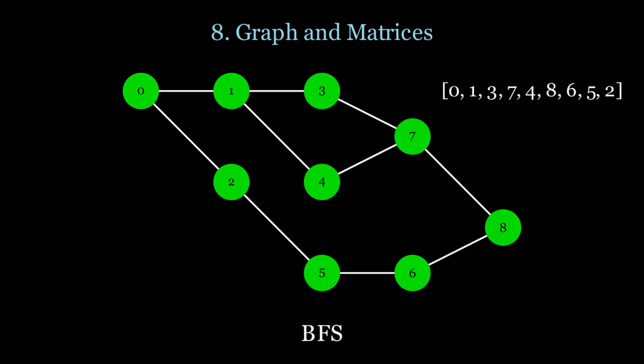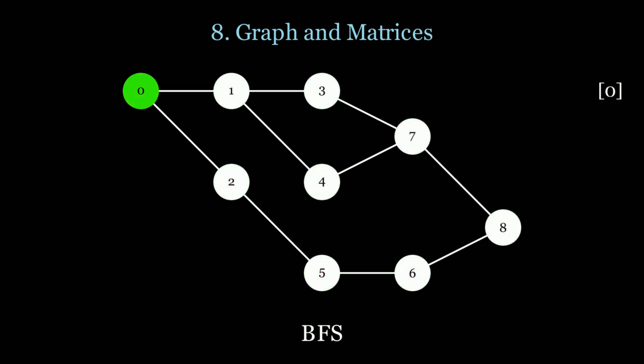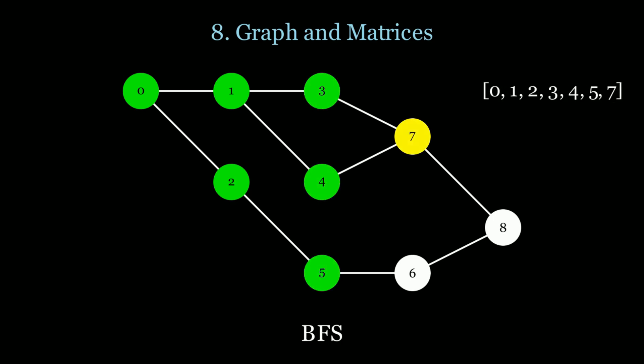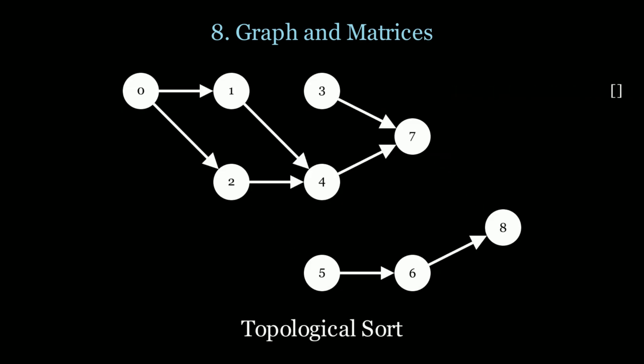Let's look at BFS now. In BFS we scan level by level, similar to binary tree traversal. Now let's have a look at topological sort. Topological sort uses a directed acyclic graph, and in topological sort you have prerequisites for each node.